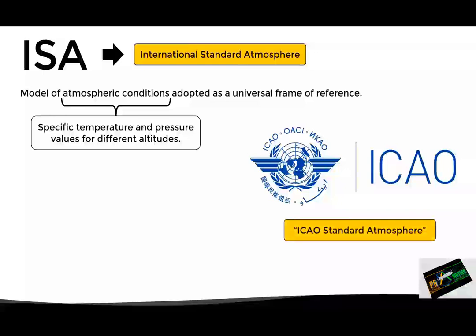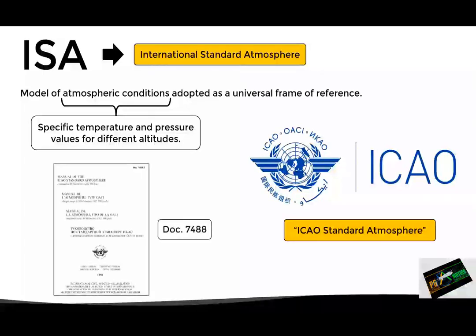Once the ISA model was created, it was published in ICAO Document 7488, where all the conditions and parameters used in the model are specified. But now, the question is, why is the ISA model needed in aviation?